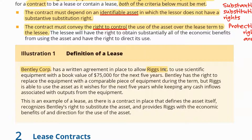Is it a lease agreement? We cannot know yet. We have to check whether we have an identifiable asset — that's the scientific equipment — and then whether Riggs has the right to control this asset. Bentley, the supplier, has the right to replace the equipment with a comparable piece during the term, but Riggs is able to use the asset as it wishes, keeping any cash inflows. In other terms, Riggs has the right to use the asset in any way, and most importantly, Riggs has control over this asset.